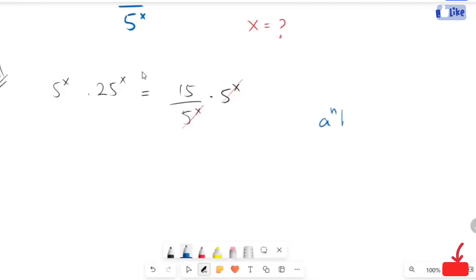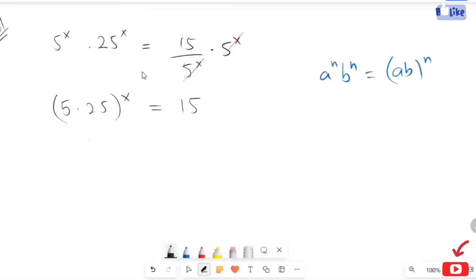Using the exponential rule, the powers combine and this turns to 125 raised to x equals 15.